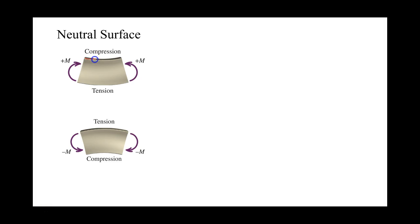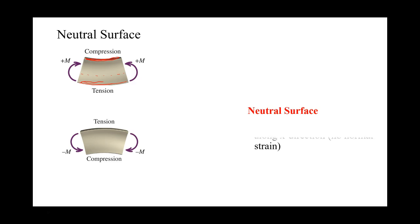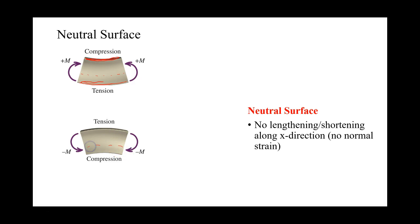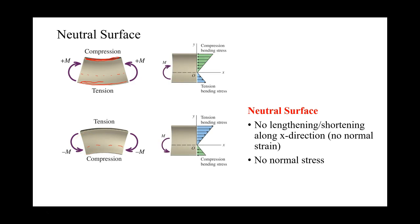As we look at the deformed shape of our beam, we see on the top portion that we have compression, and on the bottom portion we have tension. The top portion is going to shorten and the bottom portion will elongate. We're going to have a surface in between these two that won't change in shape — we call this our neutral surface. There's no shortening or lengthening along the x-axis, and also no bending stress.